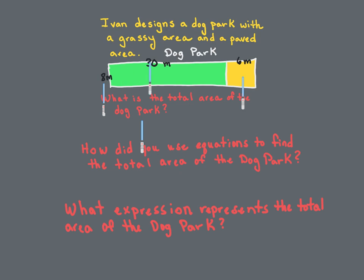This is what we call the area model. We're going to multiply the 8 with the 30 — these two factors — and then the 8 with the 6 — those two factors — to get the product. So 8 times 30: 8 times 3 is 24, add on your 0, that's 240. Add the other partial product: 8 times 6 is 48. We get a total of 288 meters.